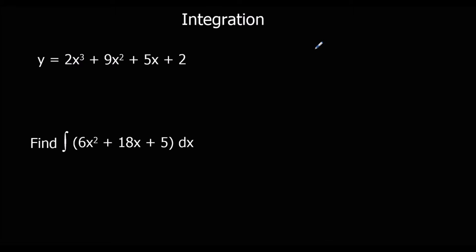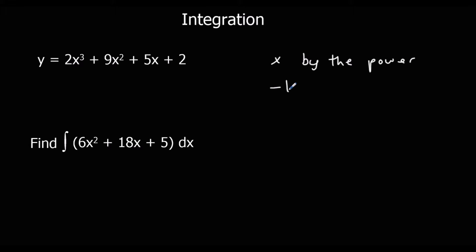So, differentiating: we times by the power, and then we take 1 off the power, and we minus 1 from the power. So this is the process for differentiation.